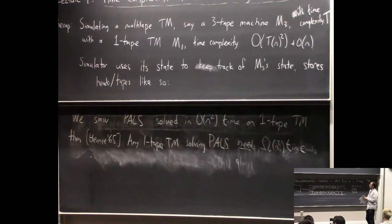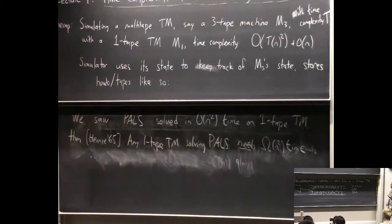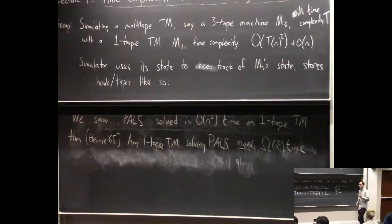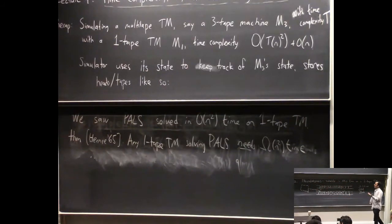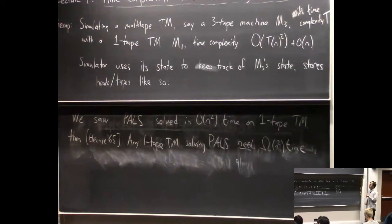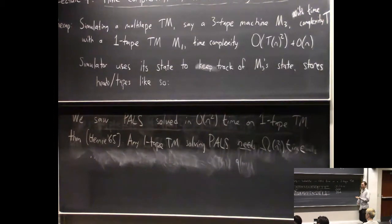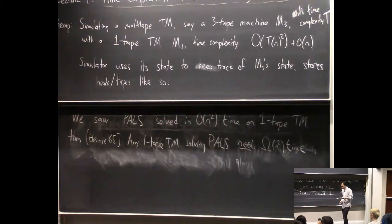One lesson to take away from this is that when studying complexity, we're not going to get too excited about the difference between linear time and quadratic time, because it depends on what model you choose. It's going to be better to make definitions that are not so sensitive to the difference between linear time and quadratic time. That will come up today when we define the complexity class P — things solvable in polynomial time.